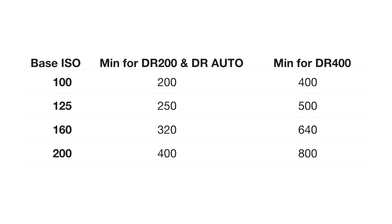This is important because you do need a specific minimum ISO in order to use the dynamic range settings, and these are all based on the camera's native base ISO. Check out this table here, which shows the minimum required ISOs for the different dynamic range settings, again based on your camera's native base ISO.